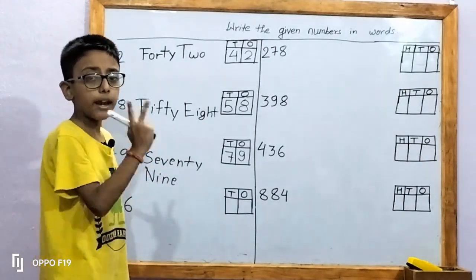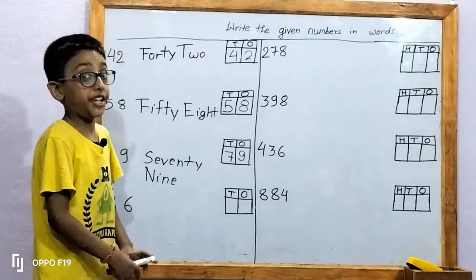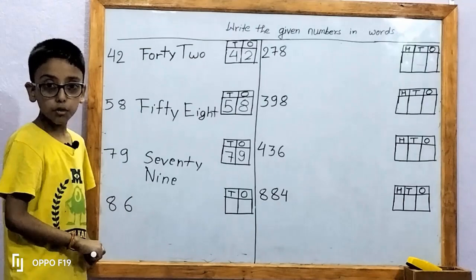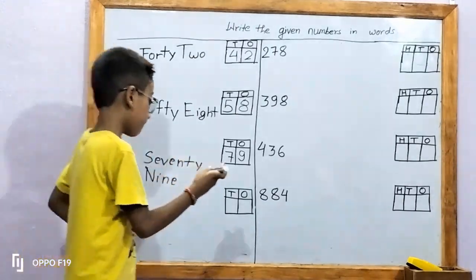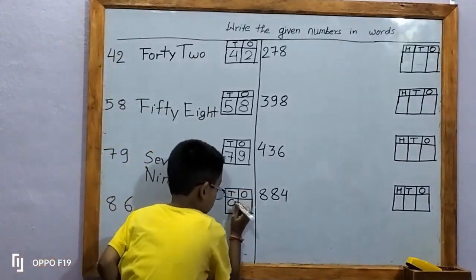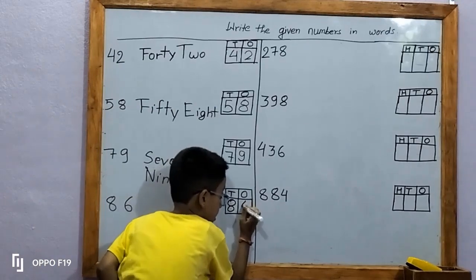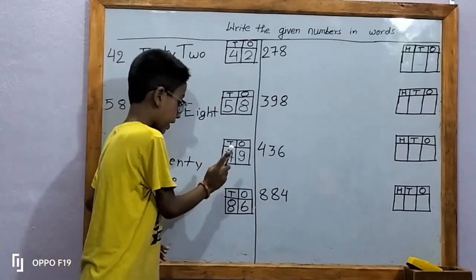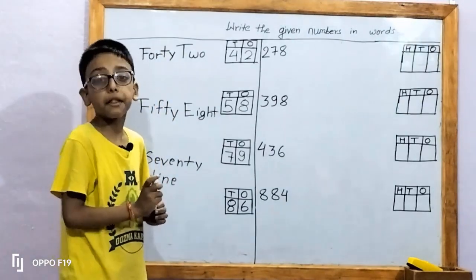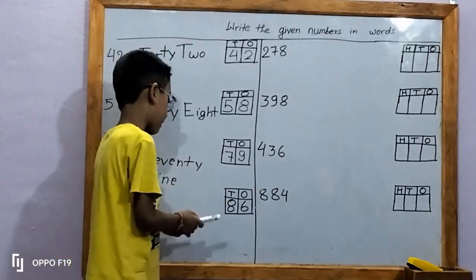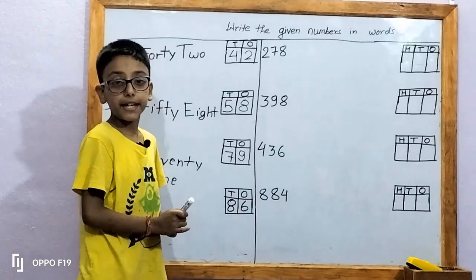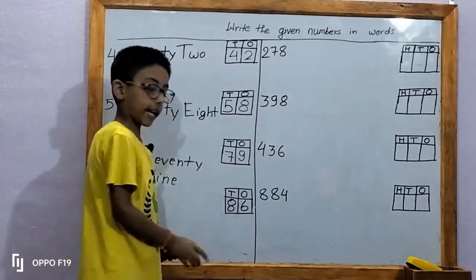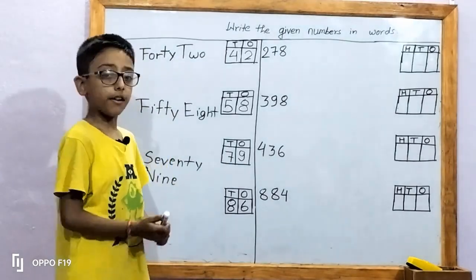Let's move on to the last two-digit number — 86. Let's write in place. Eight, six. Six is in one's place; six ones means six. Eight is in ten's place; eight tens means eighty. It makes the number 86.